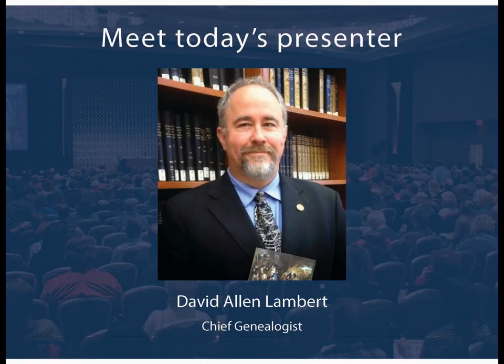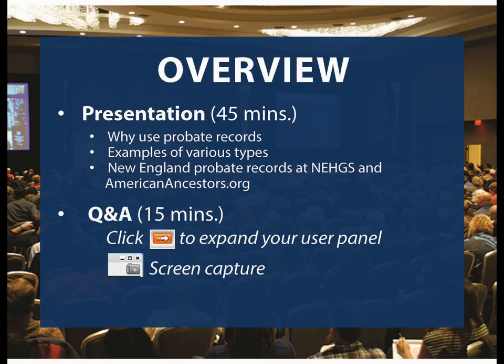Today, David will be discussing how probate records can assist you in your family history research. He will provide examples of various probate files and what you're likely to find. He'll also show you how to search New England probate records on our website, AmericanAncestors.org, and what resources you can find at the NEHGS Library and Archives. Today's discussion will focus on resources for New England — Connecticut, Maine, Massachusetts, New Hampshire, Rhode Island, and Vermont — but some of the information and techniques may help you in other areas of the country as well.